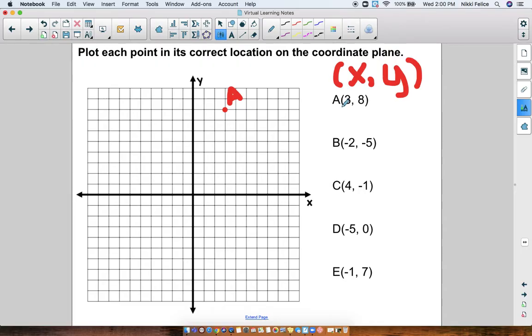Point B is at negative 2, negative 5. So my x is negative 2. Here's 0, my starting spot. I'm going to go 1, 2. That's negative 2. Then negative 5 for y means we go down 5. 1, 2, 3, 4, 5. There is point B.